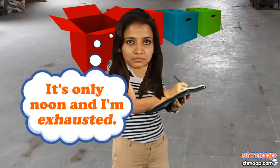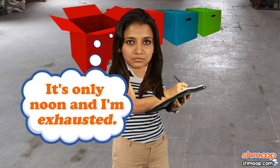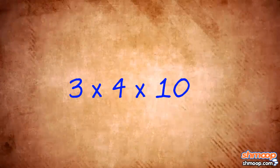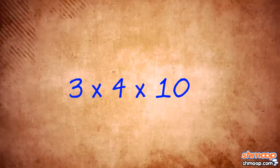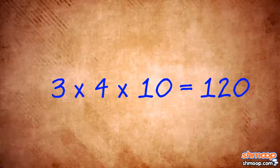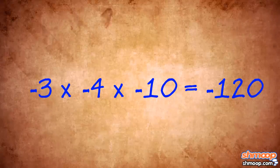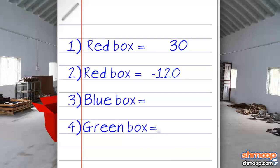Sam records the answer in her activity log and moves on. The next red box has just three numbers: negative 3, negative 4, and negative 10. So, 3 times 4 is 12 times 10 is 120. And there are three negative signs, so a definite negative answer here, right? Boom. She writes down negative 120 in the log book and is on to the next.